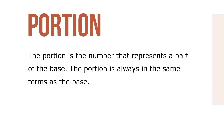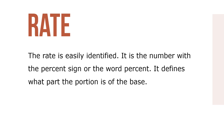The portion is the number that represents the part of the base, and is always the same unit as the base. For example, if the base is dollars, the portion is dollars; if the base is people, the portion is people; if the base is production units, the portion will be production units. The portion is the unique characteristic being measured or compared with the base. The rate is easily identified — it's the number with the percentage sign or the word percent. If the rate is less than 100%, the portion is less than the base; if the rate is 100%, the portion equals the base; and if the rate is more than 100%, the portion is greater than the base.